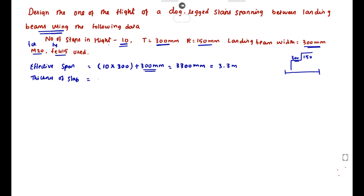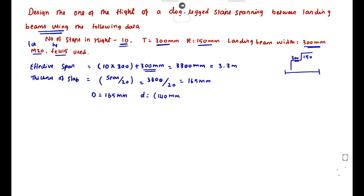Next, we find the thickness of slab. Taking this as a simply supported beam, thickness equals span divided by 20, which gives 3330 divided by 20 equals 165 mm. So the overall depth is 165 mm. The effective depth d equals 165 minus 15 mm cover, giving 140 mm.